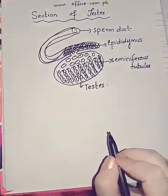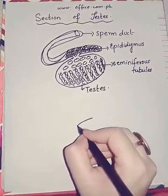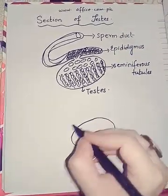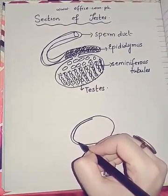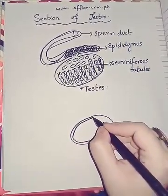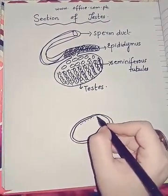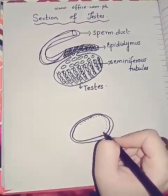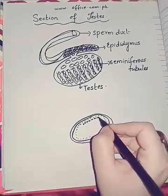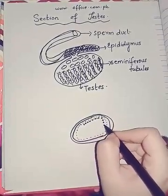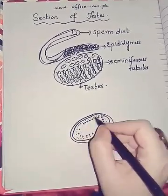I will draw the cross section. Some bigger cells. This outer layer of cells is the epithelium.